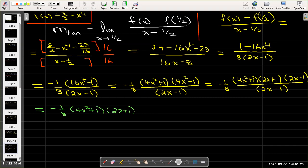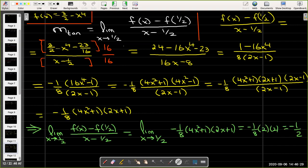So now let's go back and take the limit. What I've found is that the limit as x approaches 1/2 of f(x) minus f(1/2) all over x minus 1/2 is the same as the limit as x approaches 1/2 of negative 1/8 times 4x squared plus 1 times 2x plus 1. Now the simplified expression is continuous when x equals 1/2, so I can just use direct substitution and find that the value of the limit is negative 1/2.